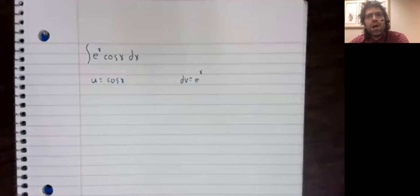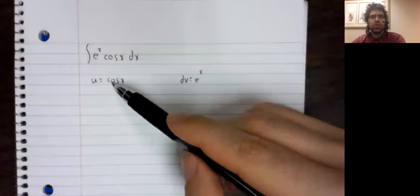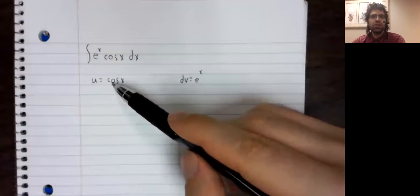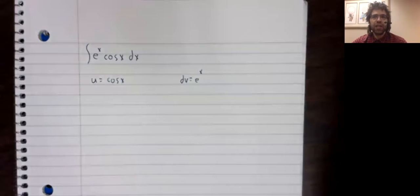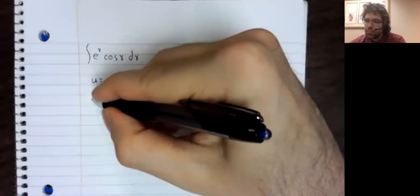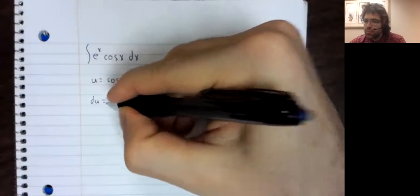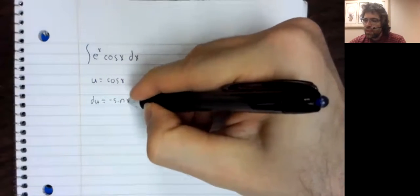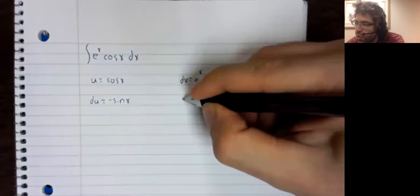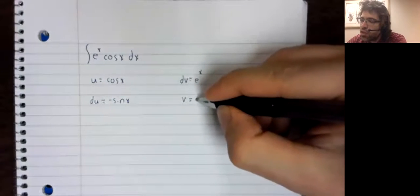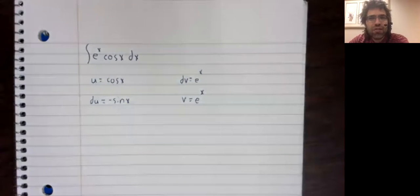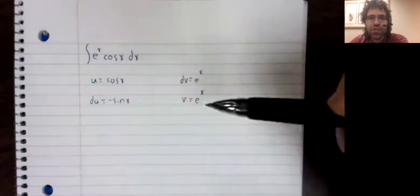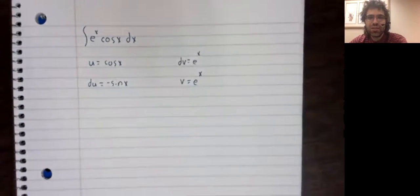Still, it's not clear what else we'd try. I selected u to be the cosine based on LIATE. The T for trig appears before the E for exponential. Well, I don't know, or I do know, but let's say it this way: it's not obvious to look at this that it will work. But at the very least computing du and v is an easy exercise.